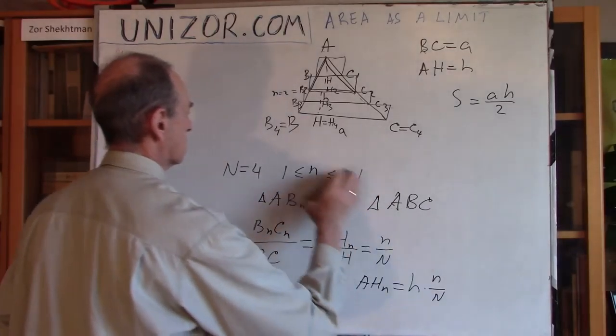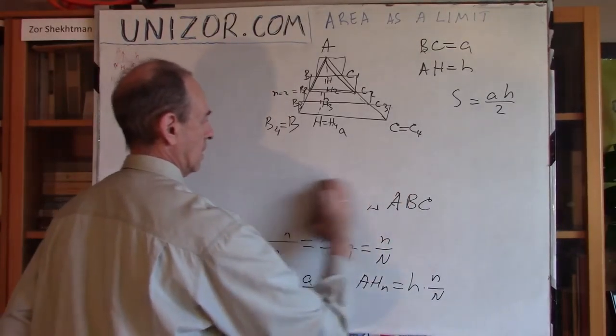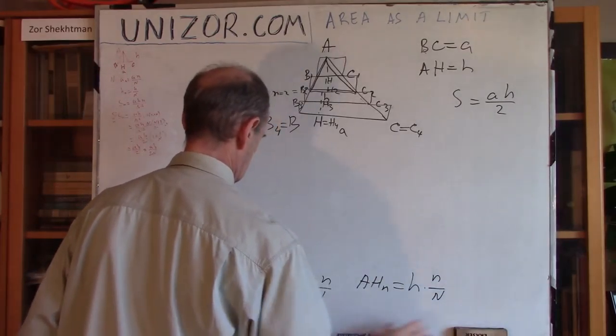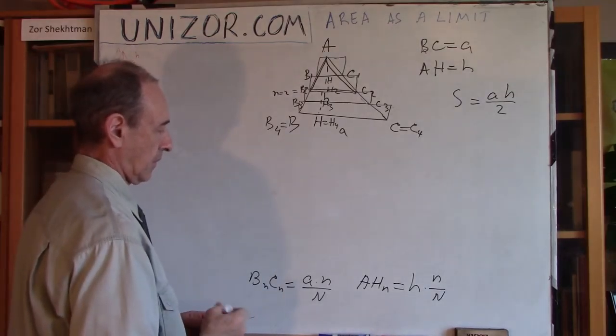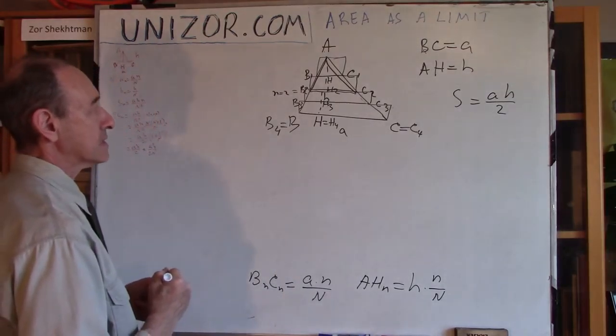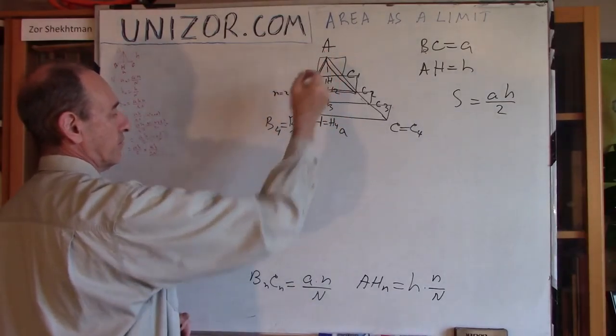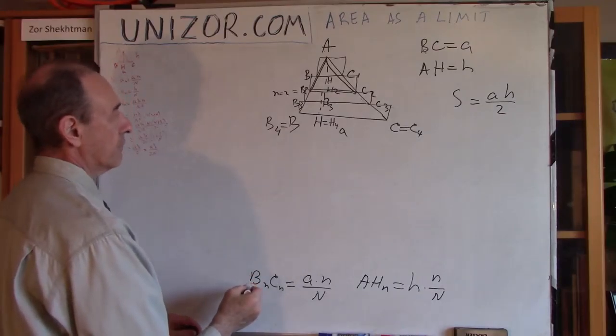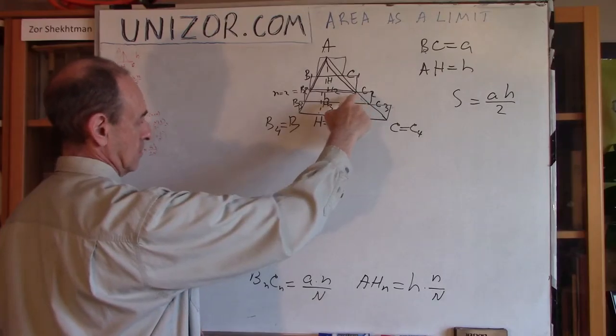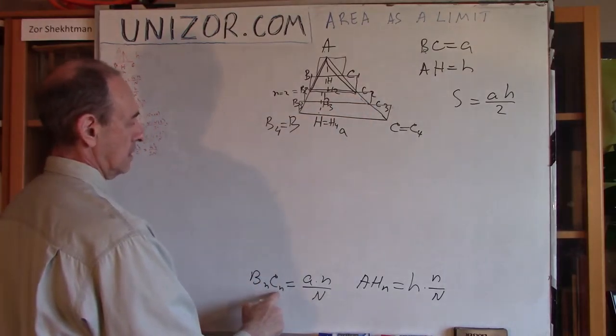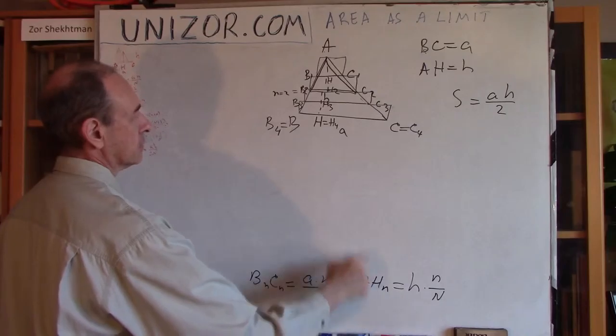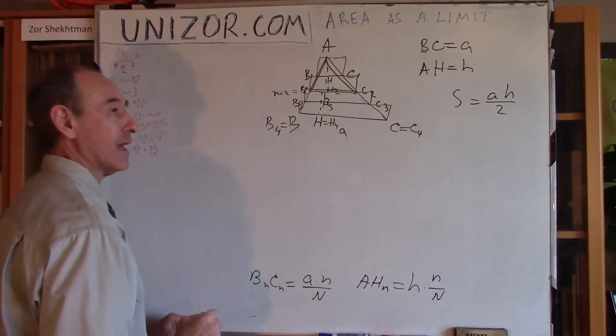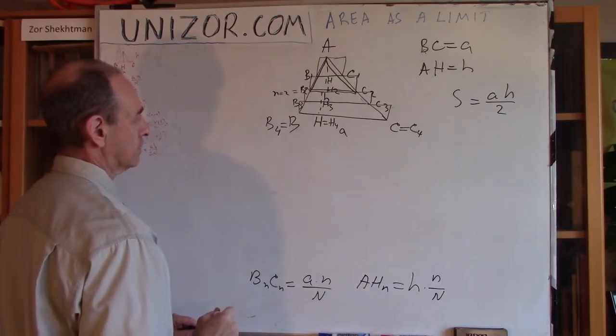Now, what follows, this is trivial. What follows is the following. Now, let's summarize all these rectangle areas. Now, the area of each rectangle is the product of its base, which is BNCN, times its height, which is one Nth. The height of each one is one Nth of the total height.